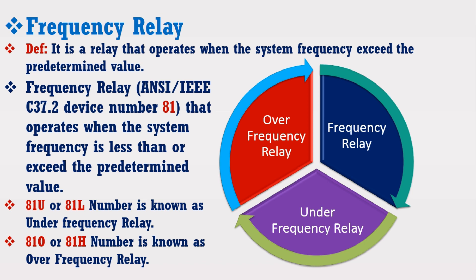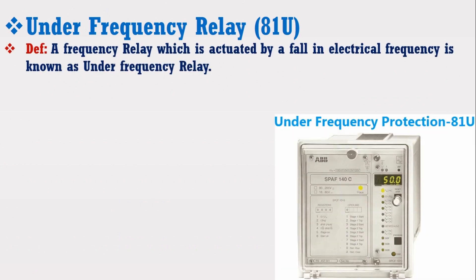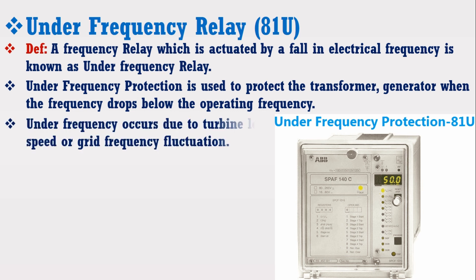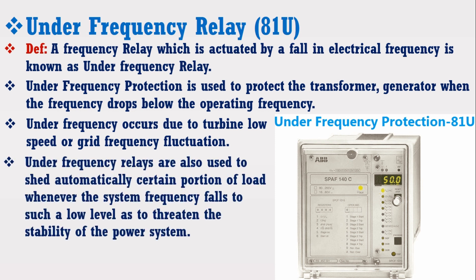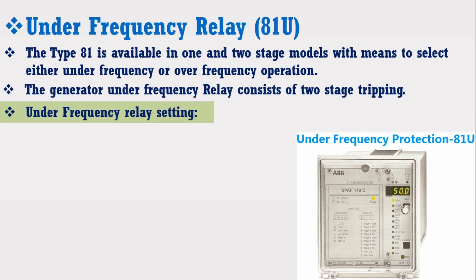Let's briefly discuss both types before their designing in MATLAB Simulink. A frequency relay which is actuated by a fall in electrical frequency is known as under frequency relay. It is used to protect the transformer and generator when the frequency drops below the operating frequency. Under frequency occurs due to turbine low speed or grid frequency fluctuations. Under frequency relays are also used to automatically shed certain portions of loads whenever the system frequency falls to such a low level as to threaten the stability of the power system. The type 81 is available in one and two stage models with means to select either under frequency or over frequency operation.